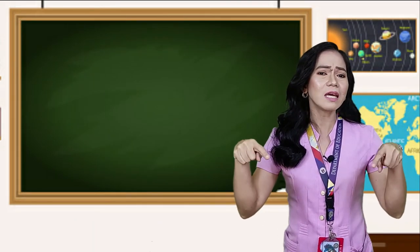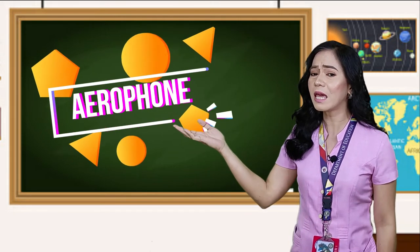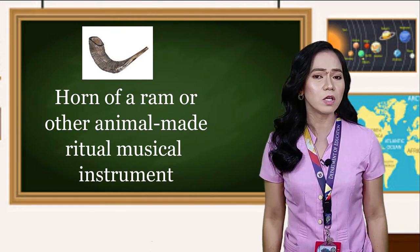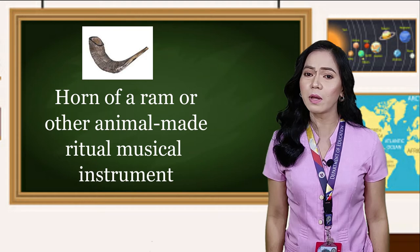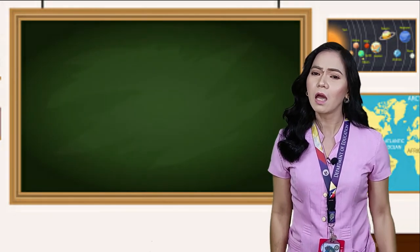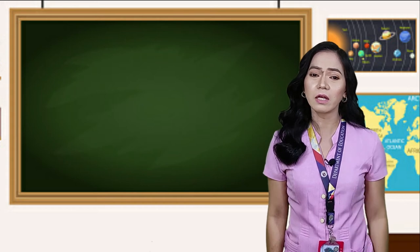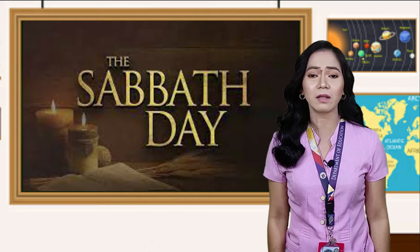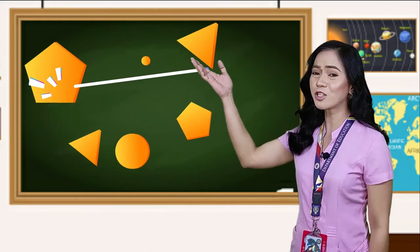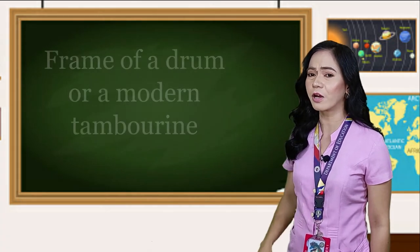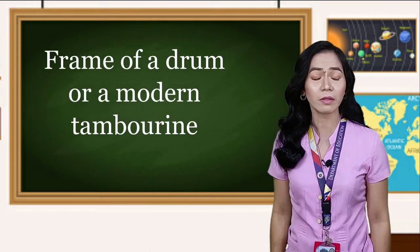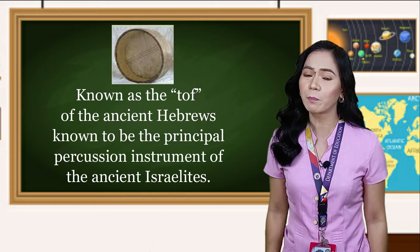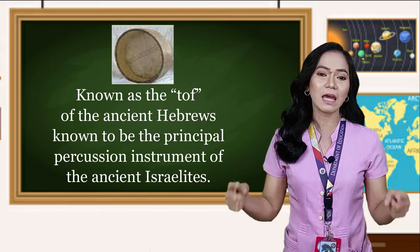Among these instruments are the following. For the aerophone instrument, a horn — the shofar — is an animal-horn ritual musical instrument used during important religious events. In biblical times, it was sounded during the Sabbath, announcing of the new moon, and proclamation of the anointing of a new king. The percussion instrument, the tof, resembles a frame drum or a modern tambourine, known as the principal percussion instrument of the ancient Israelites.